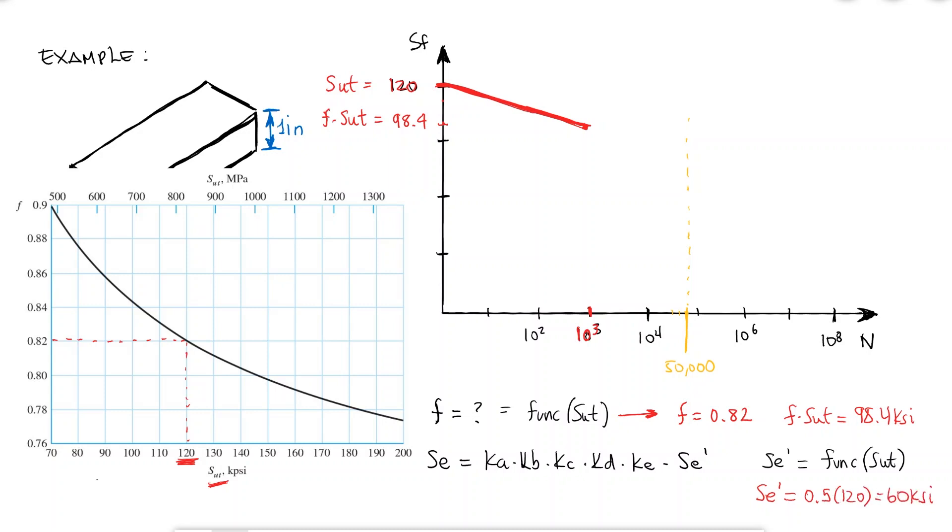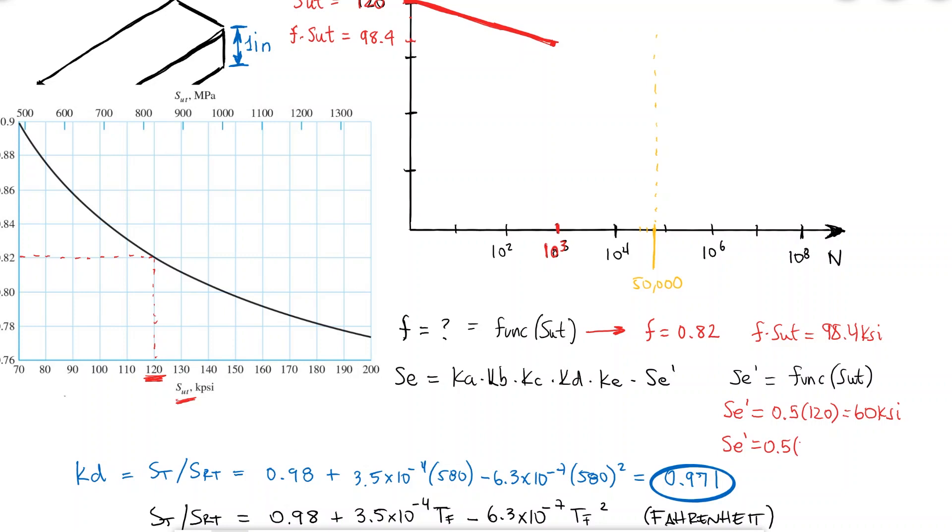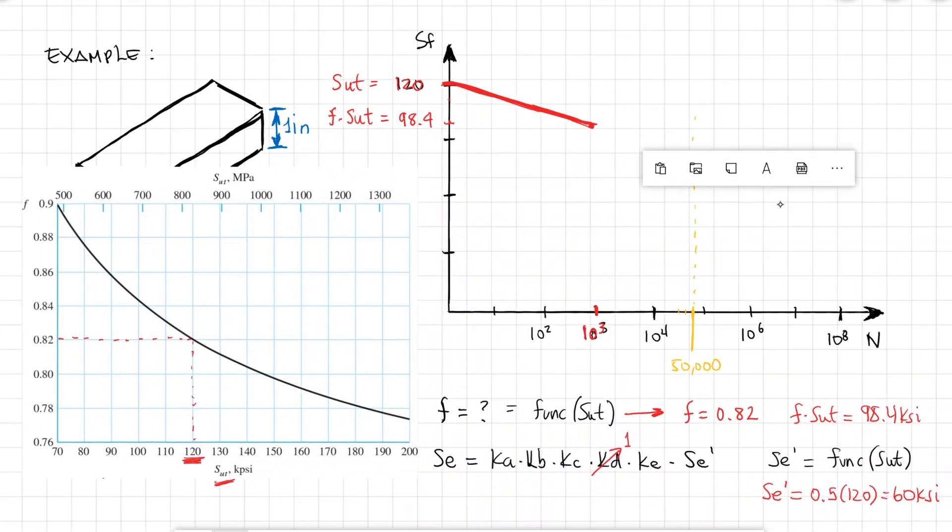Now since I used the value of 120 KSI for the ultimate strength, instead of using the given 123.6 to find that initial value for the endurance limit, I'm in practice already using KD, the temperature factor. I could still use 123.6 to find SE prime and then multiply that value by KD, but that would result in the same 60 KSI for the initial value of the endurance limit. So this just means that if I'm using the ultimate strength at the operation temperature, I no longer have to account for the temperature using KD.